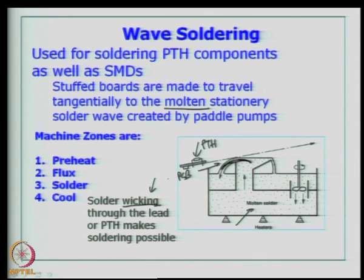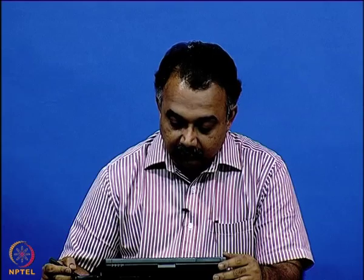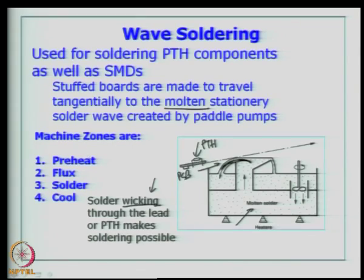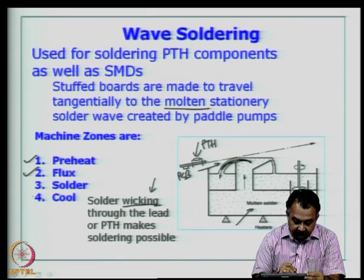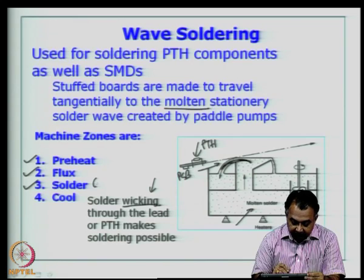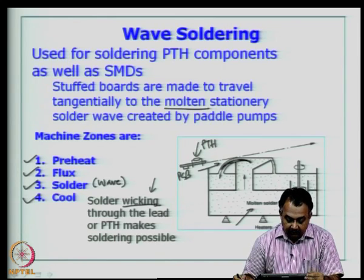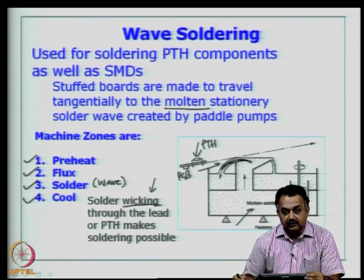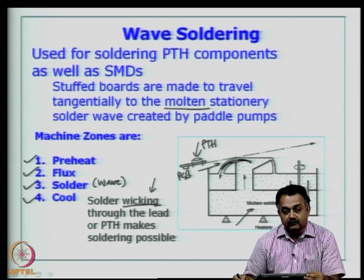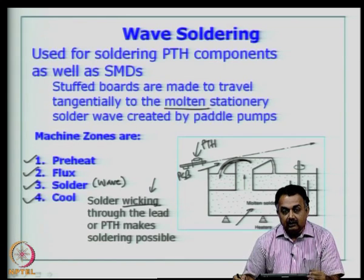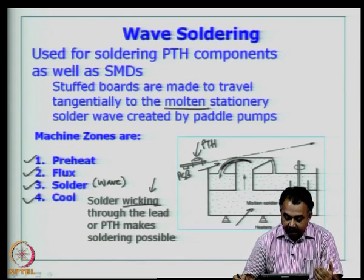We are concerned about the reliability of the through-hole assembly. The machine zones in a wave soldering equipment are: preheating the board, applying the flux, applying the solder through the wave, and then slowly cooling the board to room temperature. Initially, wave soldering was also used for surface mount devices.